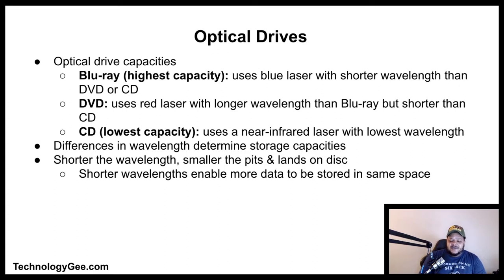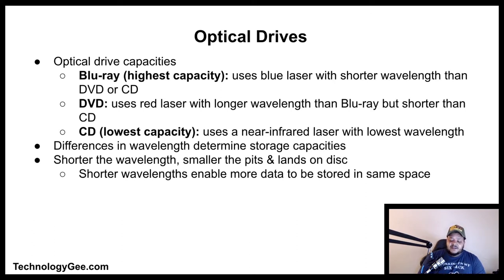Blu-ray has the highest capacity and uses a blue laser with a short wavelength. DVD uses a red laser with a longer wavelength than Blu-ray but shorter than CD. CD has the lowest capacity and uses a near-infrared laser with the longest wavelength. The differences in laser wavelengths determine storage capacities — the shorter the wavelength, the smaller the pits and lands, enabling more data to be stored in the same space.